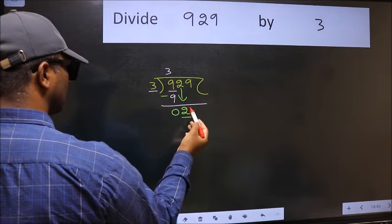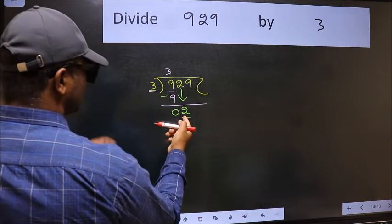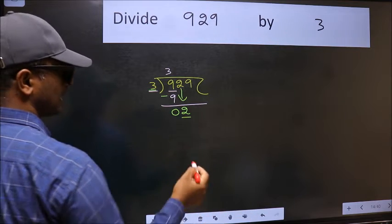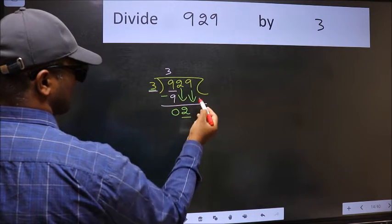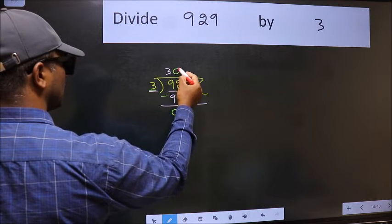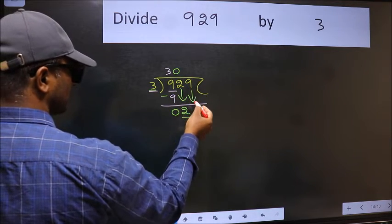Now here we have 2 and here 3. 2 is smaller than 3. So we should bring down the second number. And the rule to bring down the second number is we should put 0 here. Then only we can bring this number down.